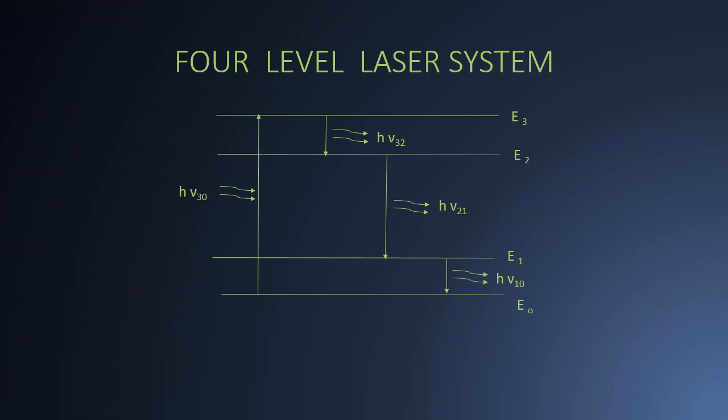After following the same procedure as in 3 level laser system, by stimulated de-excitation the atoms jump from level E2 to level E1 rather than to ground state E0. And the emission of photons of energy hν21 takes place by stimulated de-excitation of atoms from level E2 to level E1.